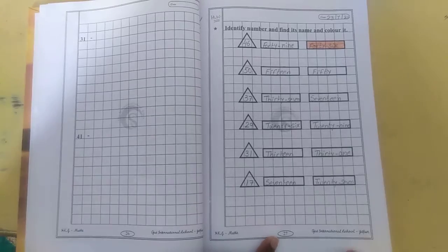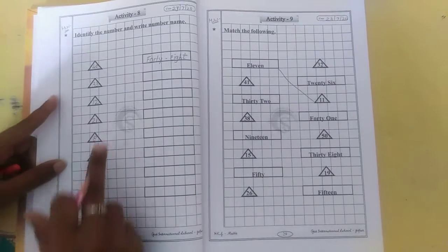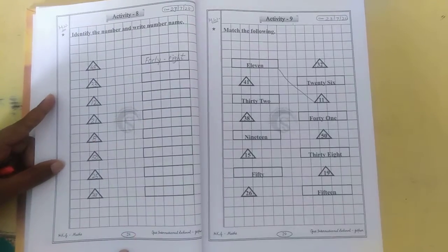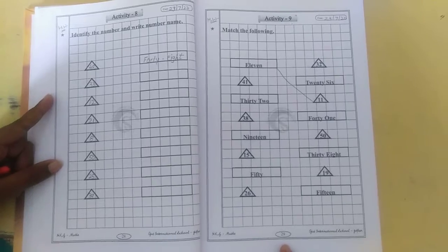One more time I am revising. What is your homework? Page number 27: identify, find and fill the color. Next, identify the number and write the number name, page number 28. And match the following, page number 29. Okay children?